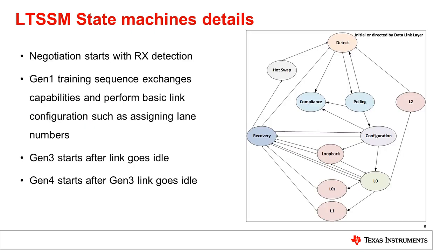The LTSSM starts with receiver detection. In this state, the root complex transmitter impedance is high. After detecting RX termination on its transmitter, it enables its own TX termination. If the root complex doesn't detect a receiver, then it continues polling in an infinite loop before moving on. The retimer also checks for termination on its output before it turns on its transmitter facing the root complex. Once the root complex turns on its TX termination, it sends out a training sequence, called a TS1, at Gen1 data rates.